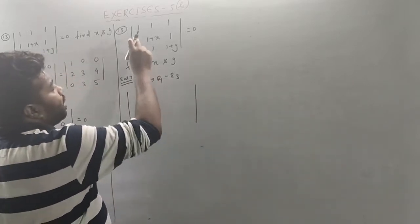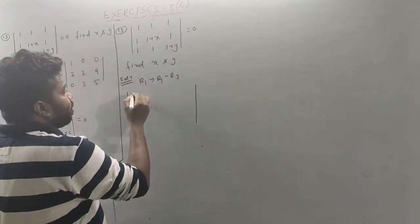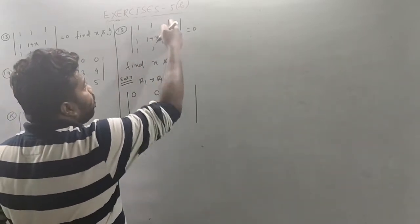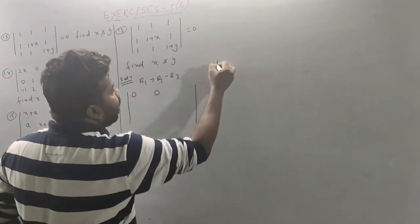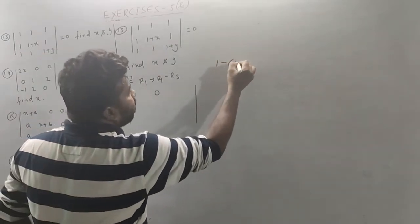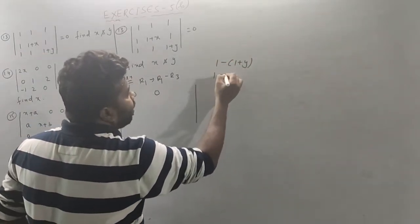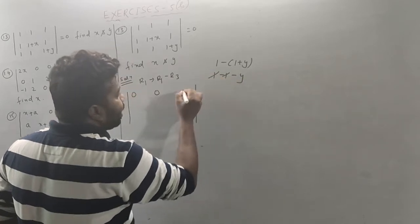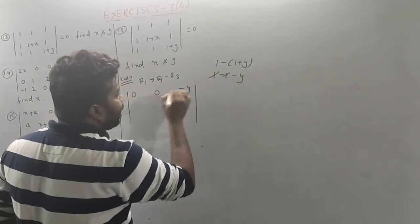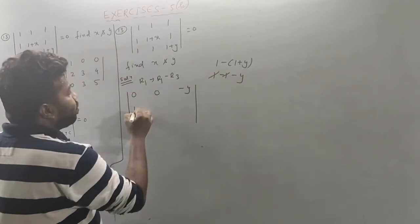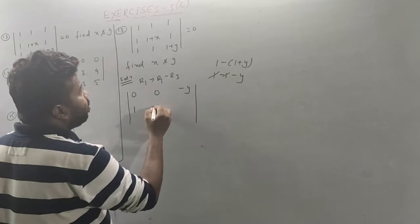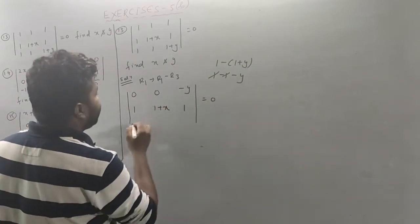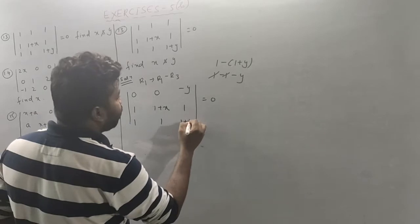R1 minus R1 minus 1 is 0, 1 minus 1 is 0. Then 1 minus 1 plus y: the plus y minus 1 cancel, so it will be minus y. The result is: 1 plus x, 1, 1, 1 plus y.